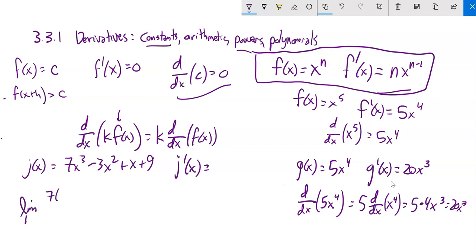Before I had these relationships, I had to go the limit as h approaches 0 of 7(x + h) cubed minus 3(x + h) squared plus x + h over h. It would be so much work. So now that I can just use those rules, I can take the derivative of each of these pieces. They're just added together.